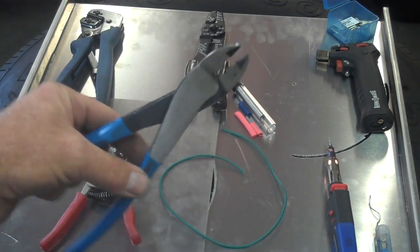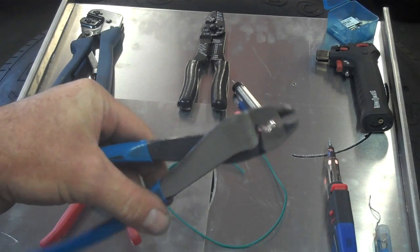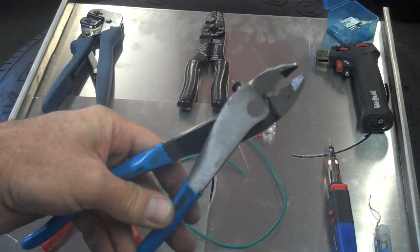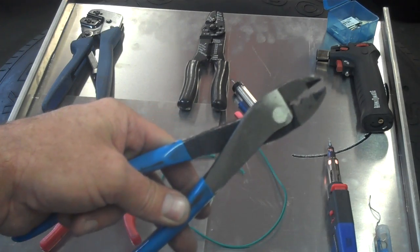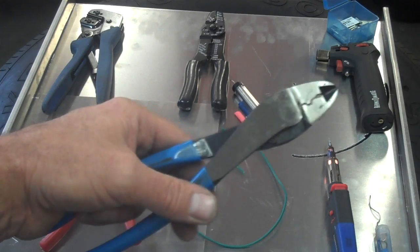Right here is a connector crimper that is also used for non-insulated terminals. You can use this with an insulated terminal, but the problem is that it also damages the insulation, and so you're not going to have a weatherproof connector.